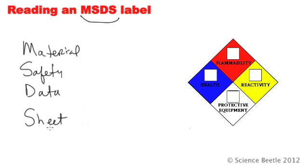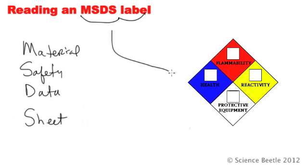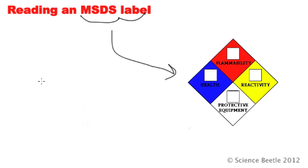I really urge you to look at the MSDS sheets that are provided in the chemistry classroom prior to doing any experiments in the lab, so that you know exactly how to handle those chemicals. There is also a shorthand version, which we call the MSDS label. This here is the actual MSDS label — an extremely small shorthand that gives you a very quick glimpse of what some of the hazards are going to be.